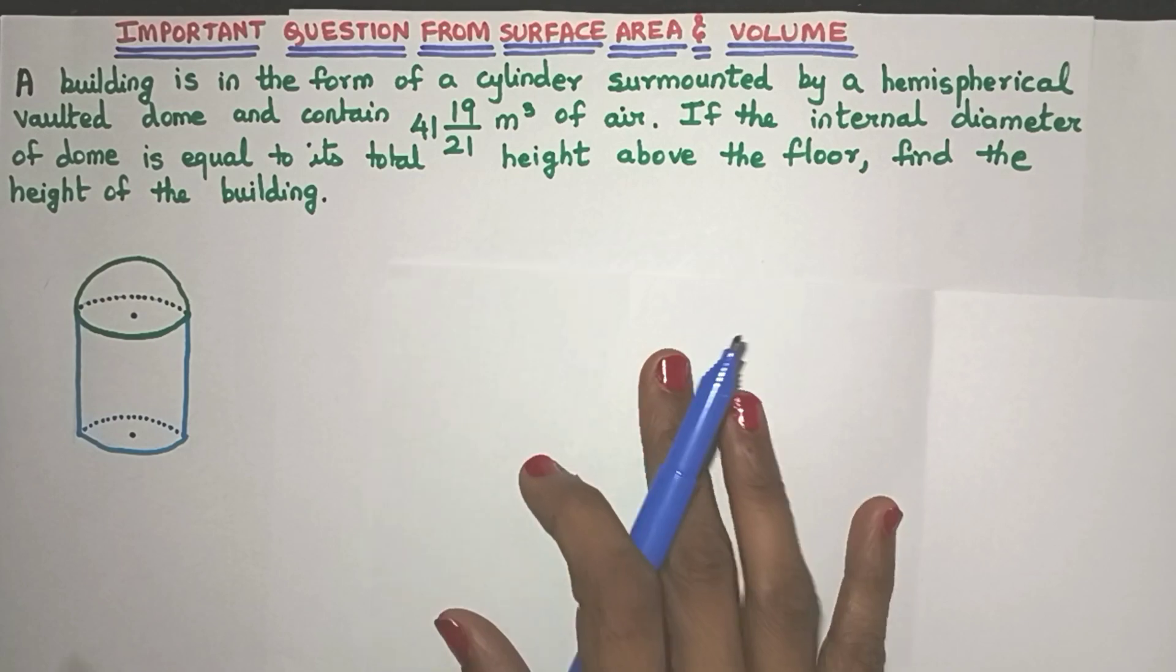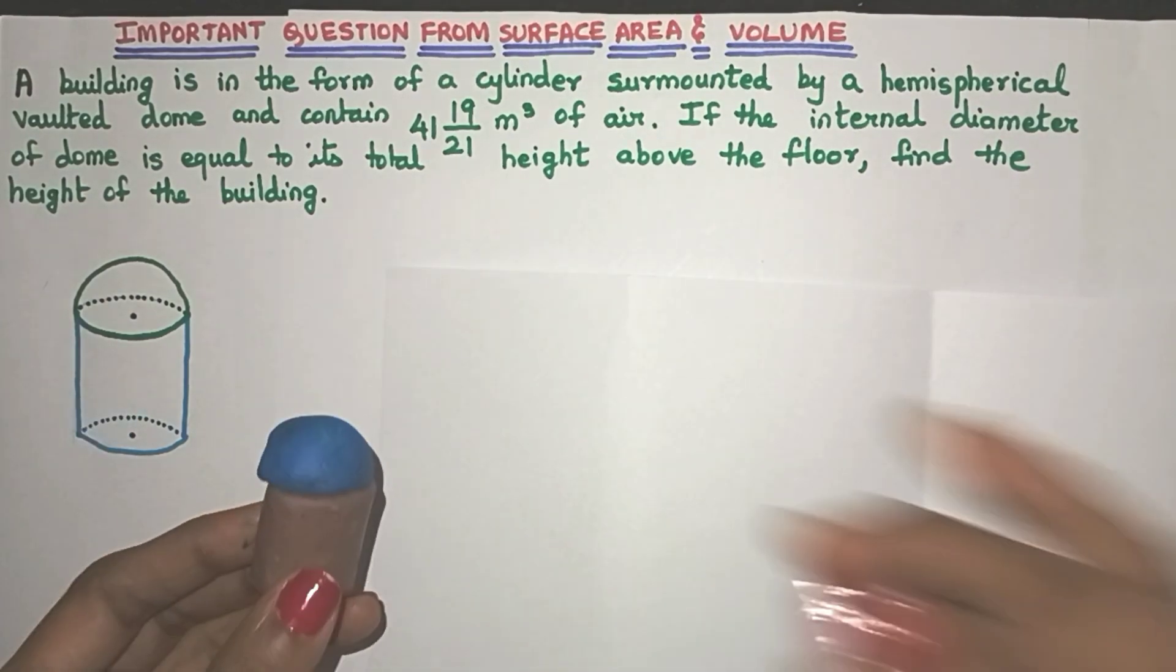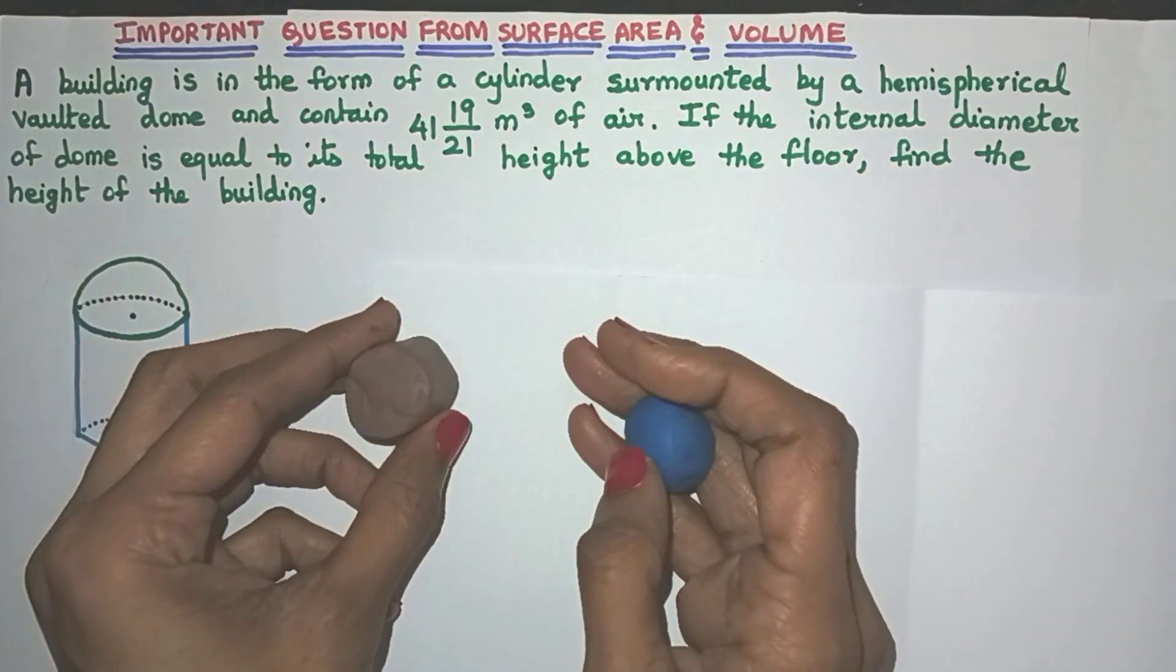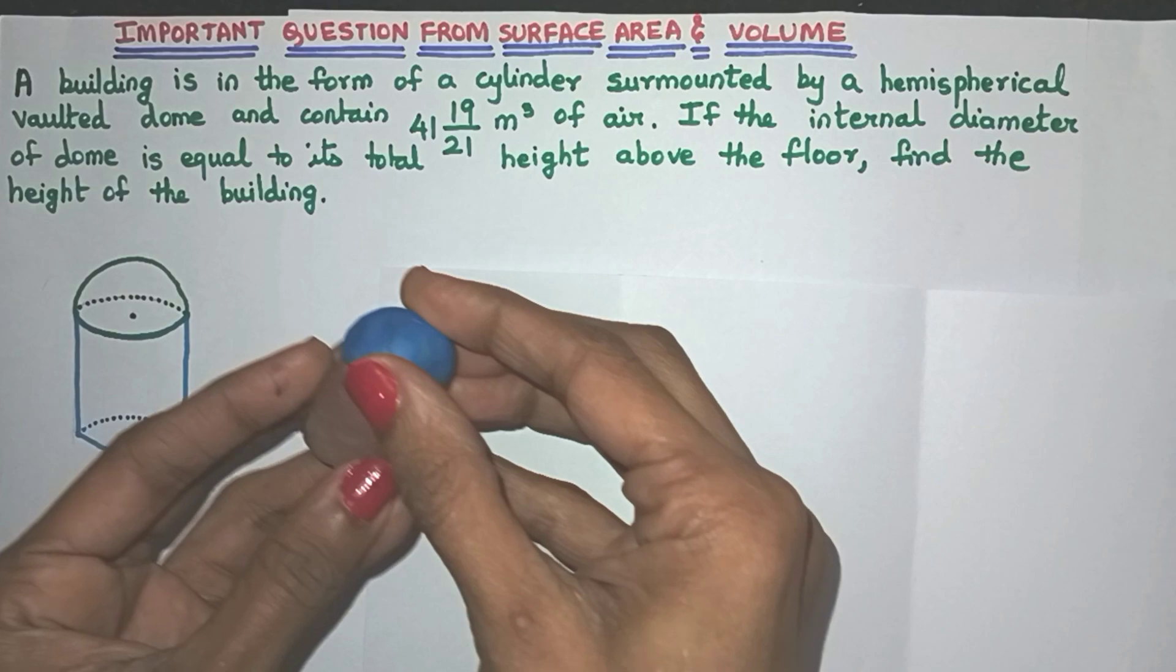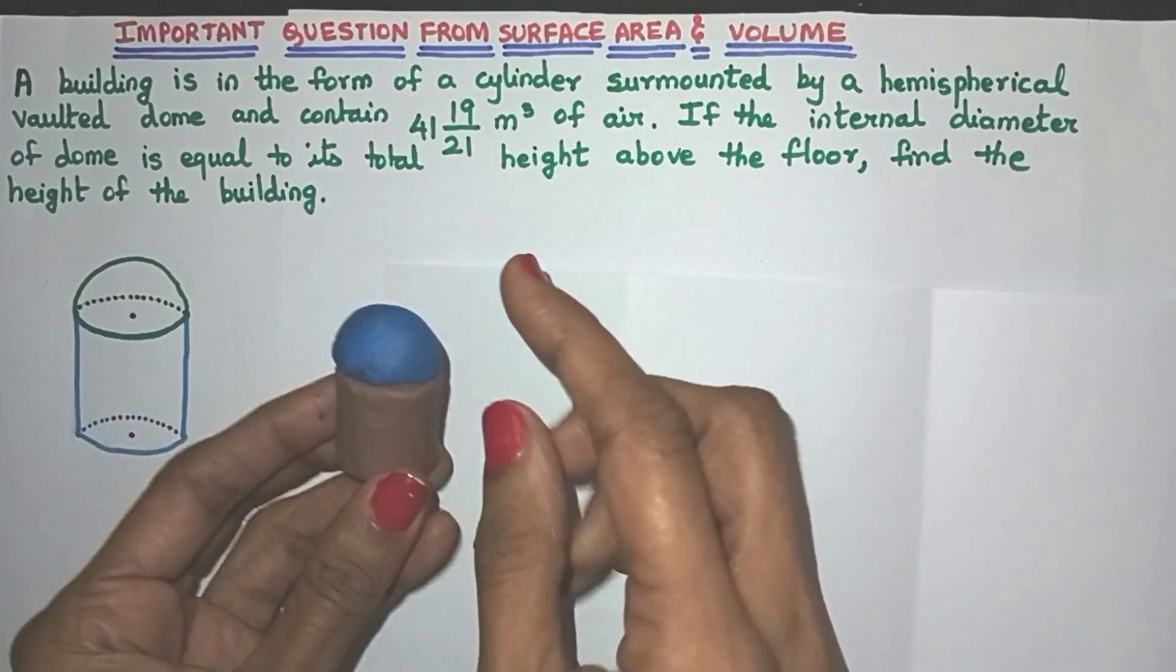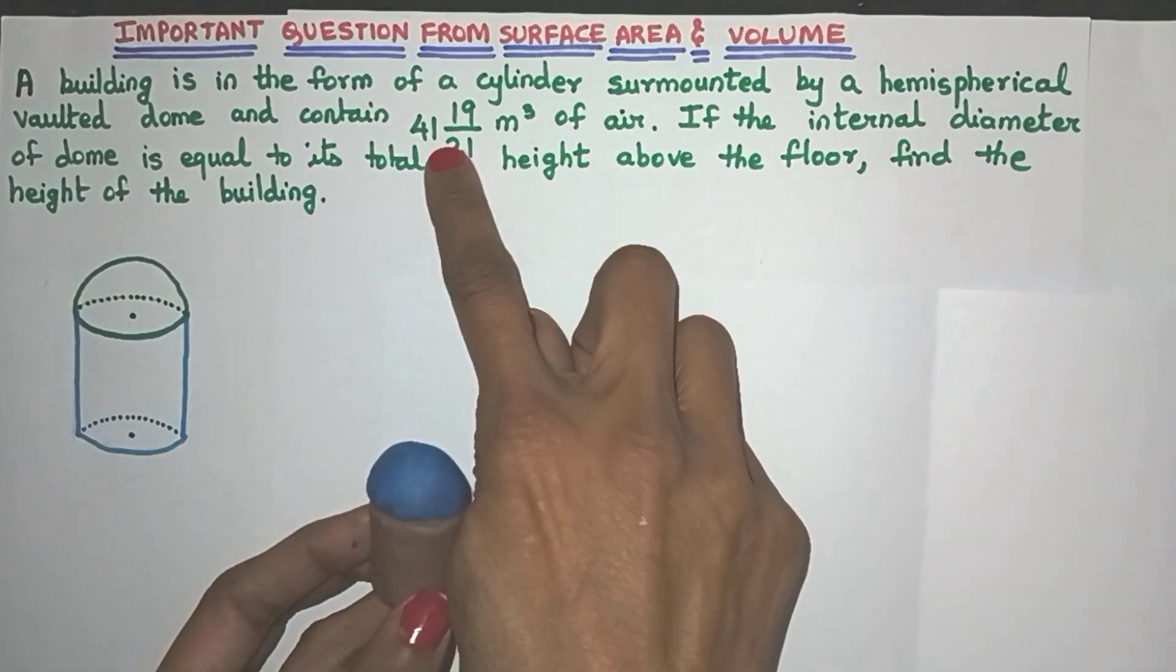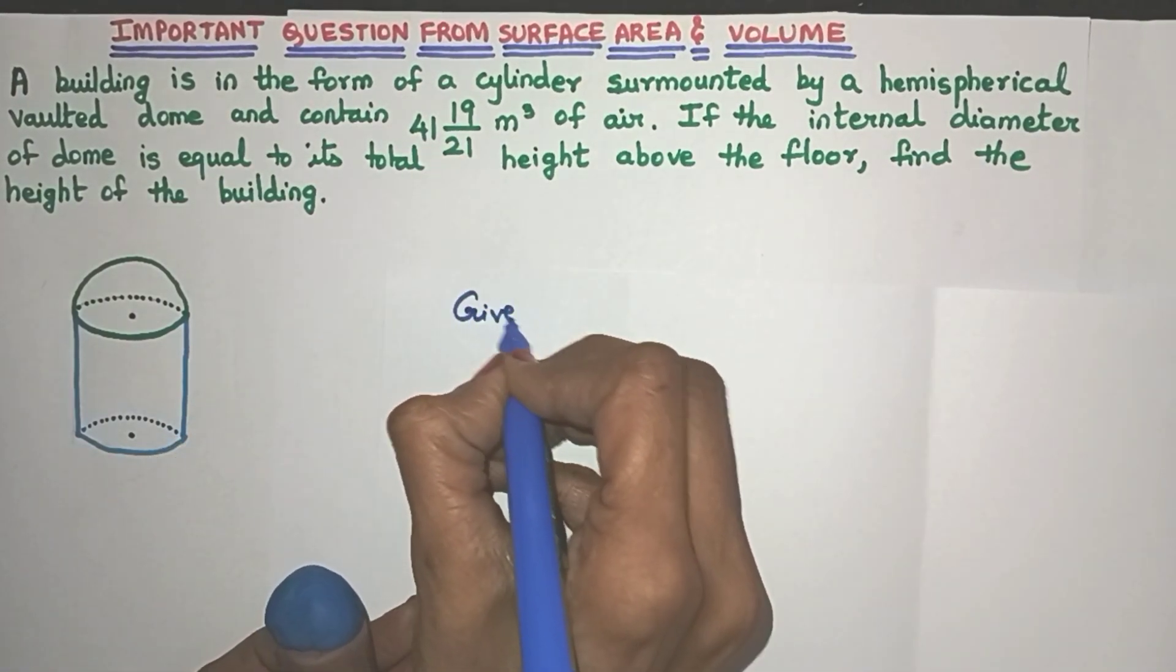So friends, I have drawn a rough figure. So here is the cylinder and also a 3D model so that we better understand this question. This is a cylinder and this is surmounted by a hemispherical vaulted dome. So here is a cylinder and on top of that, surmounted means placed on top, there is a dome and it contains so much meter cube of air. So this is one of the given data. So let's write it down.